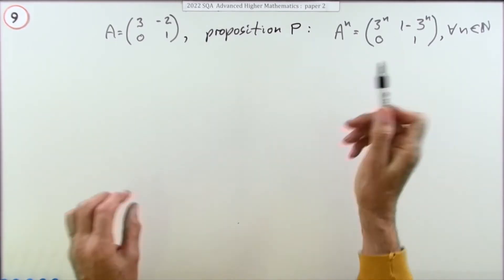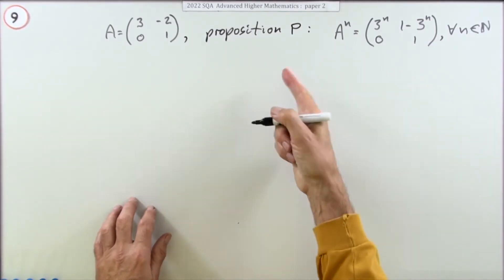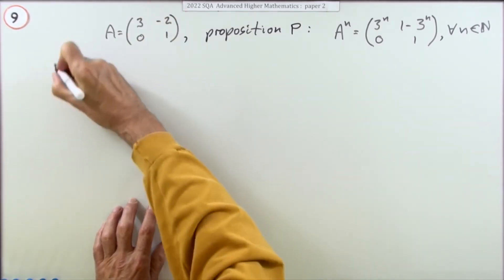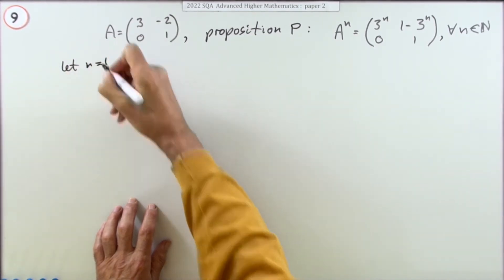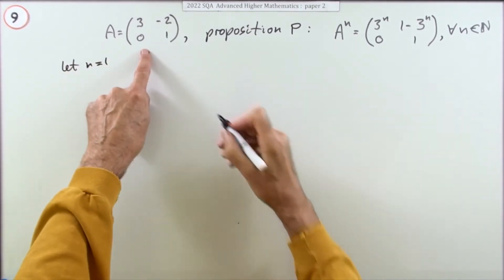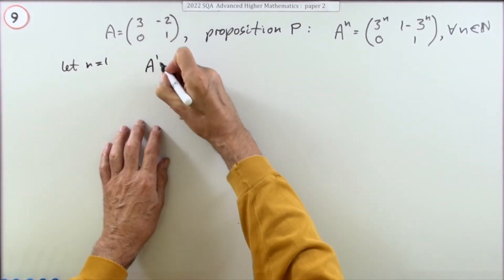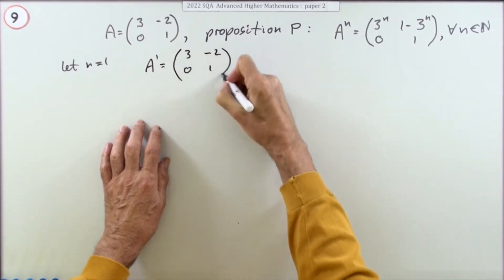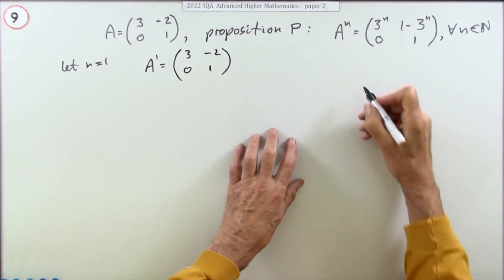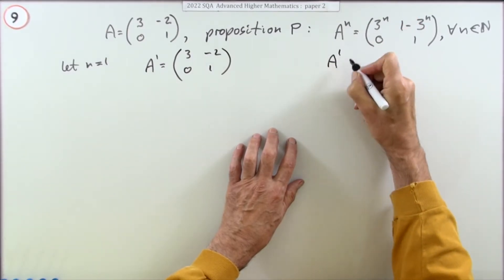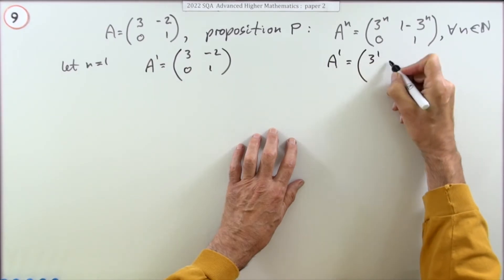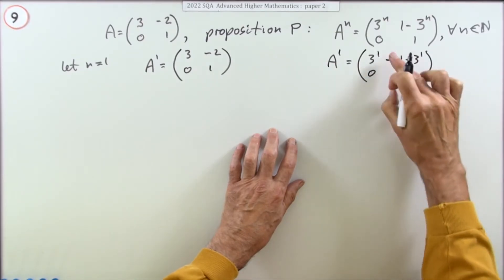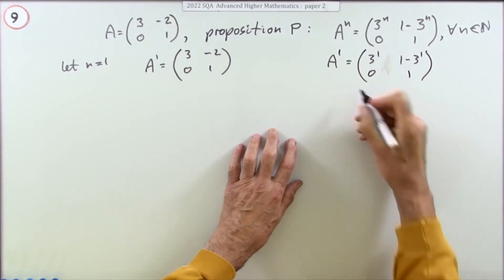Then when I refer to it I can just say P meaning this proposition. You have to get a base to start with. What's the specific case? We test for this. If you let n equal one, this side would be A to the power one, which is obviously just still A. So the result should be (3, -2; 0, 1). If I use this proposition and put one into it, I should have (3^1, 1-3^1; 0, 1).